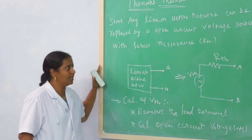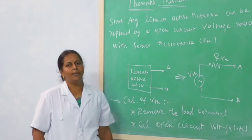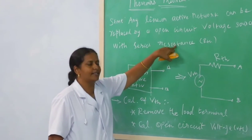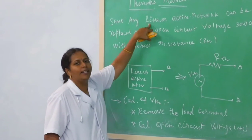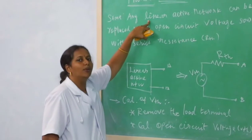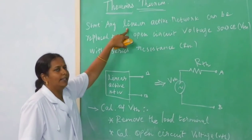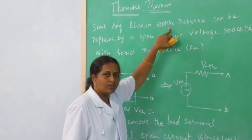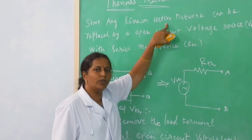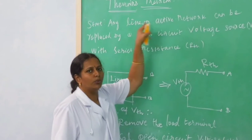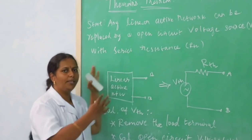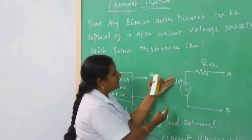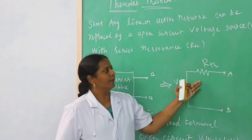In the case of Thevenin's theorem, the theorem statement is: any linear active network can be replaced by a voltage source — that is, an open circuit voltage source — with series resistance. Linear in the sense, if it satisfies the voltage-current relationship V proportional to I, then the circuit is known as a linear active network. If the sources are energy sources, then the network is known as an active network.